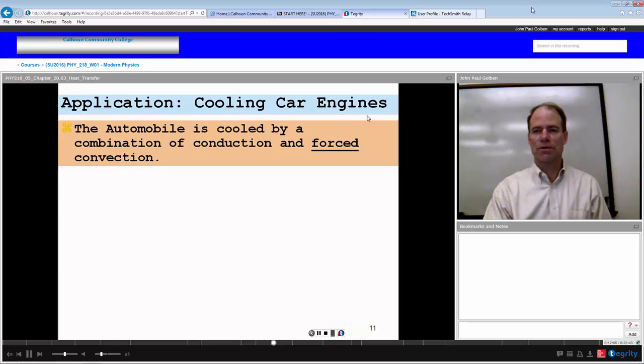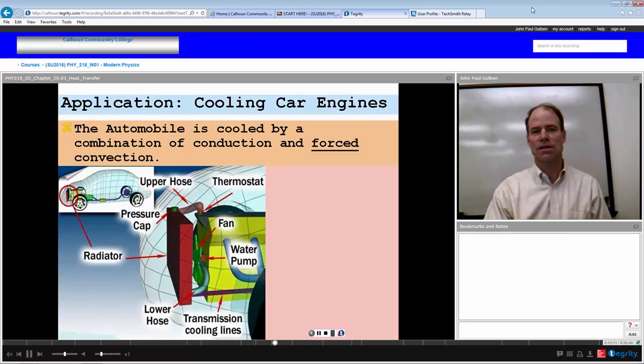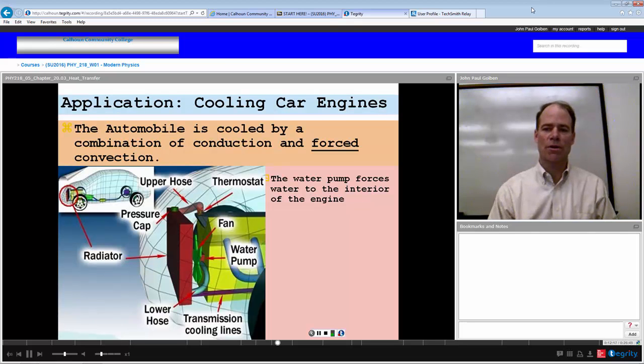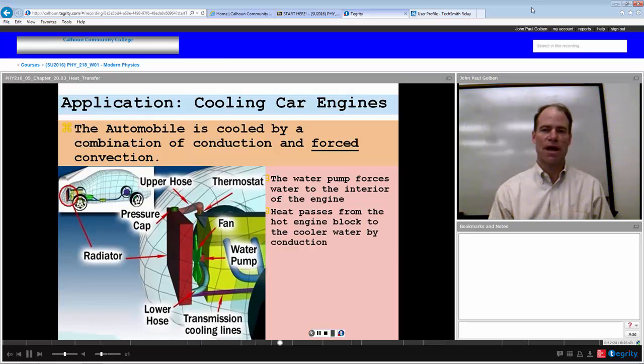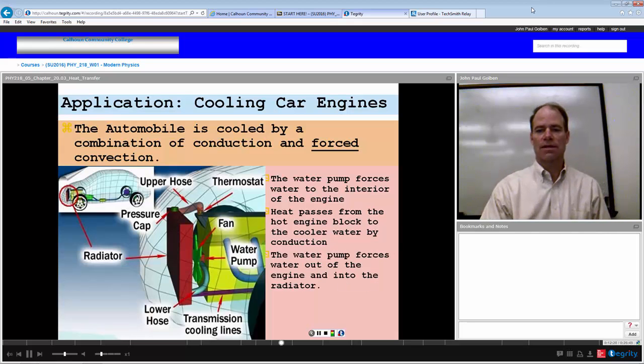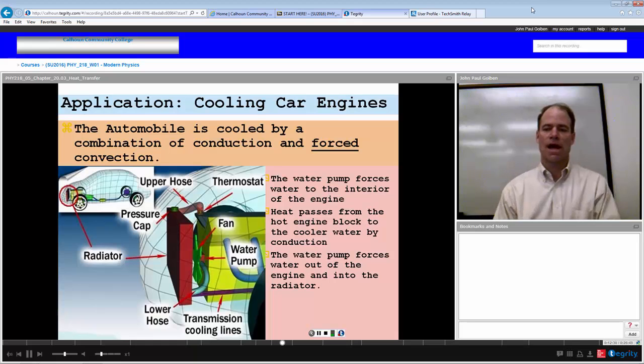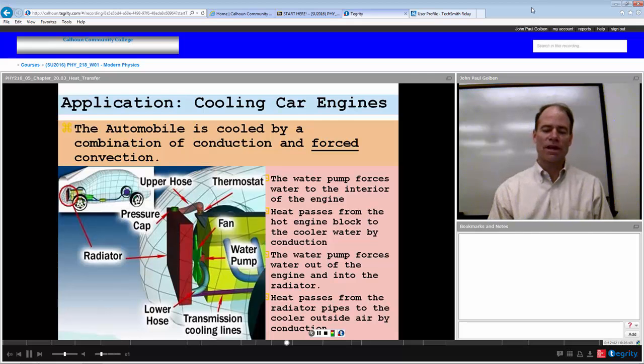Here's another example of convection, forced convection, and also conduction: cooling a car engine. We can imagine first we have a water pump which is forcing water into the interior of the engine, allowing the heat to pass from the hot engine block to this cooler water. And then the water is forced out of the engine into the radiator. So we have a forced convection in that sense of forcing the heat substance to another location. The radiator allows the heat to transfer to the air and then the air is blown away. So we have forced convection of the water through the water pump cooling the car engine.